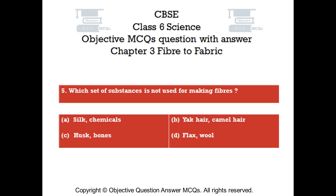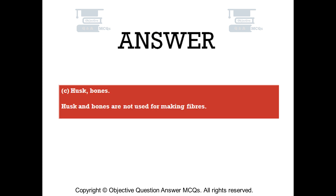Question number 5. Which set of substances is not used for making fibers? Option A: silk, chemicals. Option B: yak hair, camel hair. Option C: husk, bones. Option D: flax, wool. The right answer is option C — husk and bones. Husk and bones are not used for making fibers.